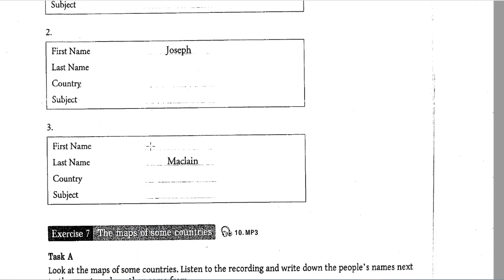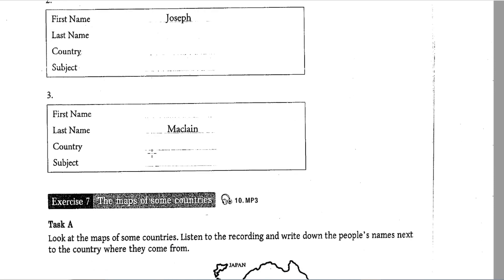Conversation 3: OK, Ms. McLean. Let me just check this information. Is your first name spelt E-L-L-E-N? No, my first name is Elena. It's spelled E-L-E-N-A. And you are from Brazil, correct? No, I'm not from Brazil. I'm from Mexico. Mexico. But you are studying English, right? Yes, that's right.